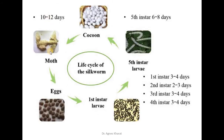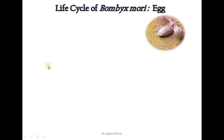The life cycle shows that the adult female lays eggs which hatch out into larvae. These larvae pass through 5 instar stages, and then the 5th instar larva is converted into a cocoon, from which the adult emerges. This is the life cycle of the silkworm.